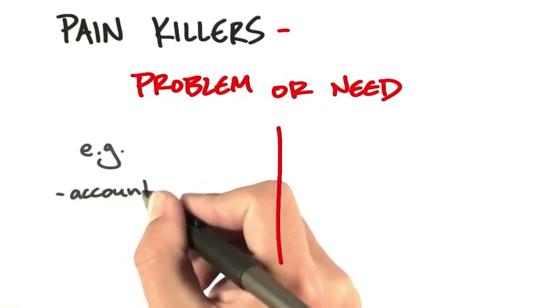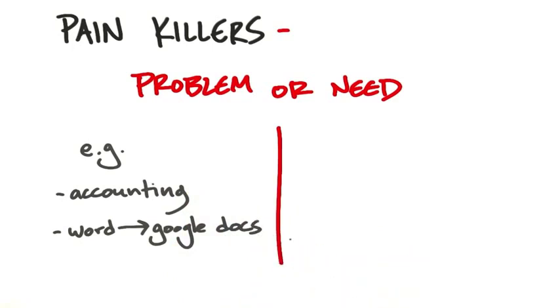Somebody has an accounting problem or a word processor, or they can now use Google Docs versus Microsoft Word, versus a need. What's a need?